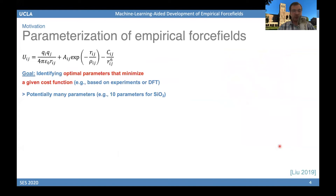We are specifically working on the case of silica, SiO2, which has 10 parameters that need to be optimized for the force field. To optimize those parameters, we define a cost function based on properties computed by molecular dynamics and compared with experiments, or by comparing molecular dynamics with DFT or ab initio molecular dynamics results, which serve as a reference.